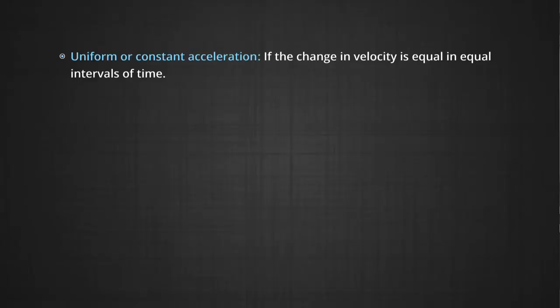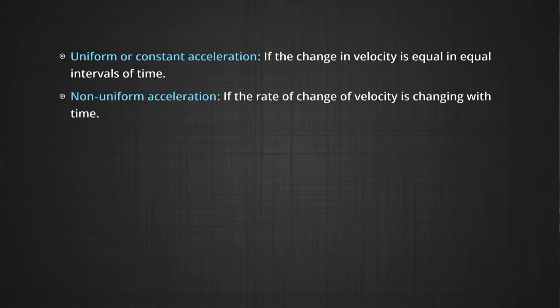Acceleration is uniform or constant if the change in velocity is equal in equal intervals of time. This is also called uniform or constant acceleration.